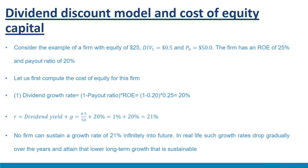Consider a firm with equity of $25, Div₁ = $0.50, current price P₀ = $50, ROE of 25%, and payout ratio of 20%. Dividend growth rate = (1 − payout ratio) × ROE = (1 − 0.2) × 0.25 = 20%. Notice this growth rate seems unusually high. The cost of equity with this growth rate would be R = 0.5/50 + 20% = 21%. No firm can sustain a growth rate of 21% indefinitely. In real life, such growth rates drop gradually over the years and attain a lower, sustainable long-term growth rate.